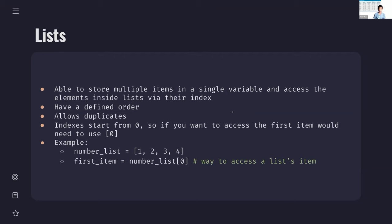Let's discuss lists. Lists are a data structure where you can store multiple items in a single variable. You can access these items using an index. They have a defined order and they allow duplicates. Unlike lists in other languages, you can have multiple different data types in a Python list — you can have both strings and integers. This is because Python is a more flexible language.